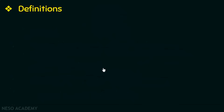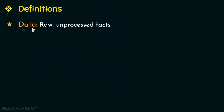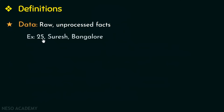First we'll be looking into the basic definitions in relation to DBMS. The first one is data. Data is any raw facts or unprocessed facts that you can record — like for example any numbers, name of a person, name of a place, any kind of text, images, audio, video, etc. All these are called as data.